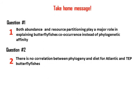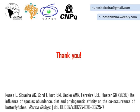In summary, we found that both abundance and resource partitioning play a major role in explaining butterfly fish co-occurrence instead of phylogenetic affinity. And also, there is no correlation between phylogeny and diet of our Atlantic and tropical Eastern Pacific butterfly fishes. Thank you very much for watching.